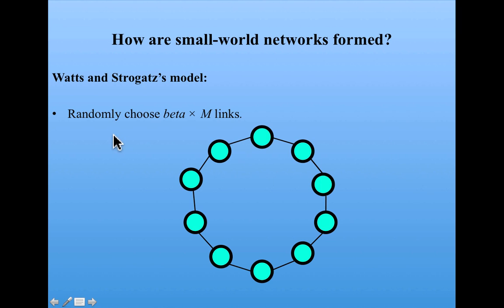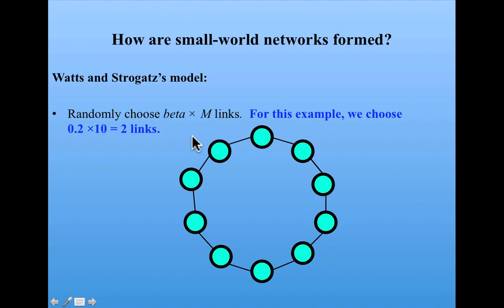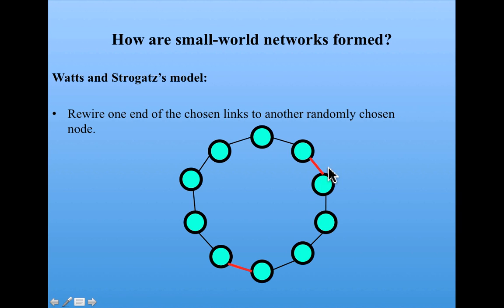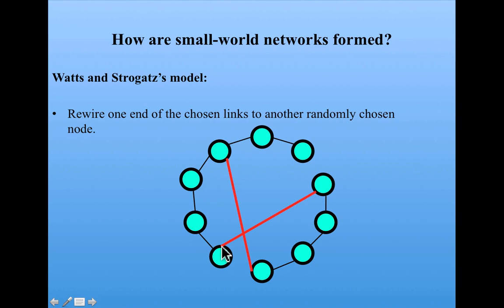The way this works is I'm going to randomly choose beta times M links, so that's 0.2 times 10, which is 2. So I choose two links, the ones that now appear in red. I chose them at random, and I'm going to rewire one end of each of those links to another randomly chosen node. Here's our new network, where most of the connections are between nearest neighbors, but there are two exceptions that are long distance connections.